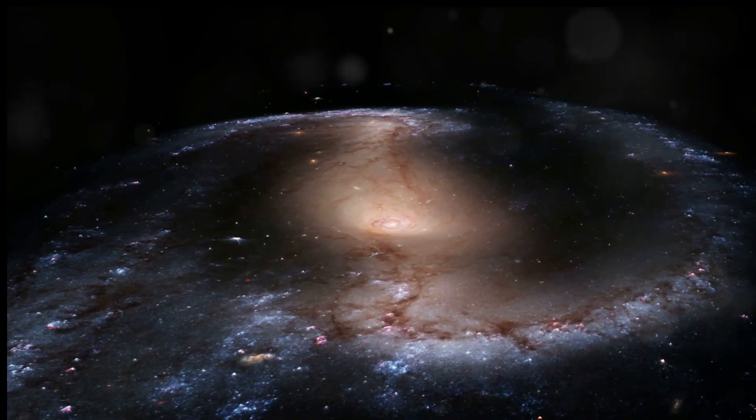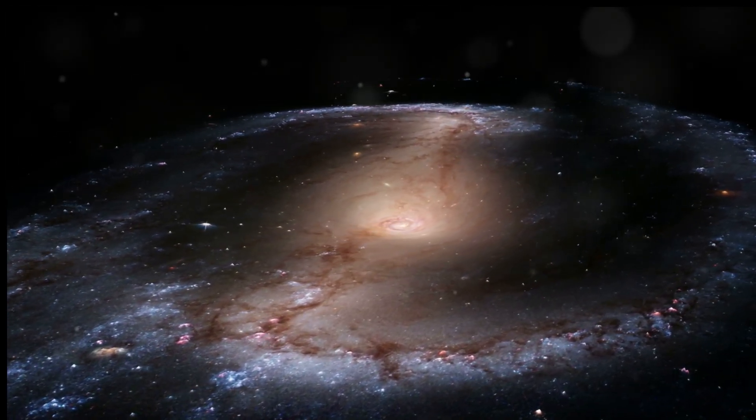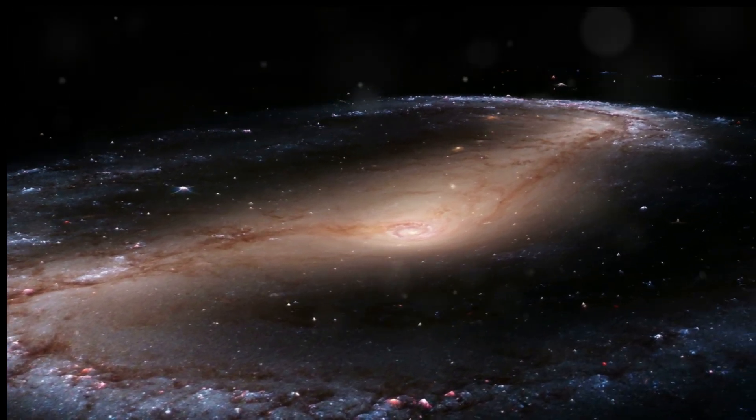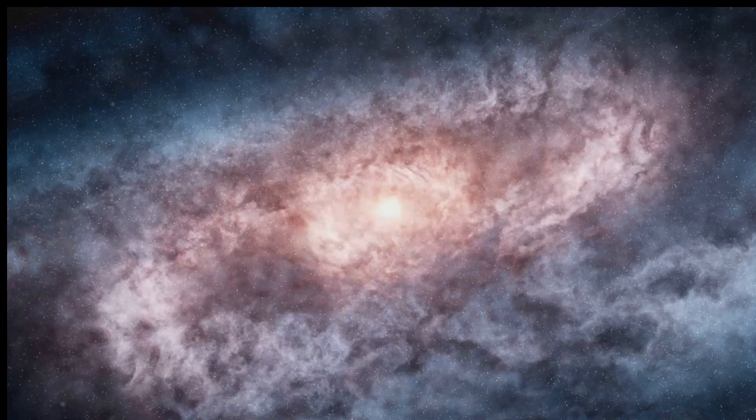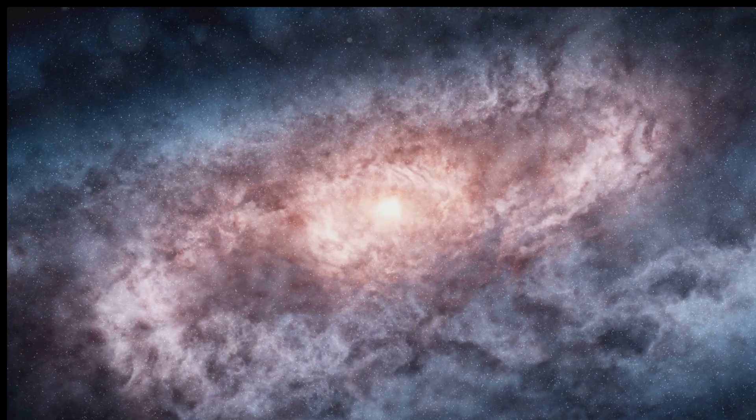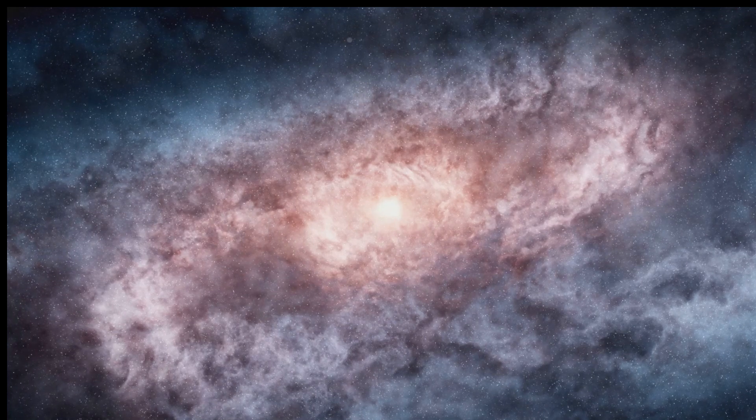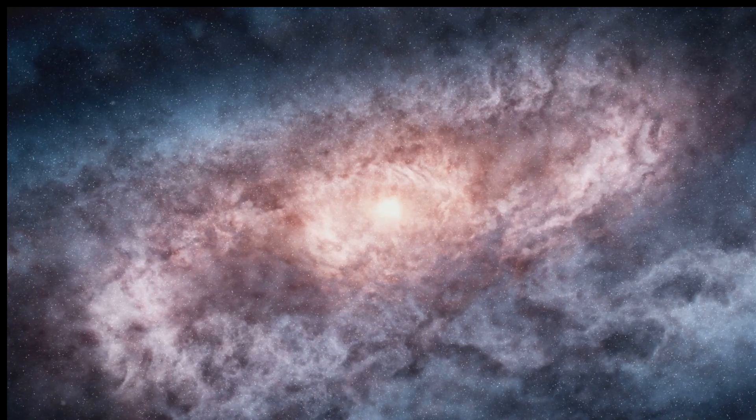Over billions of years, the two galaxies will eventually merge into a single giant elliptical galaxy, a cosmic behemoth composed of the remnants of their stellar populations. This new galaxy will be a blend of the stars, gas and dust from both galaxies, forming a new unified structure.